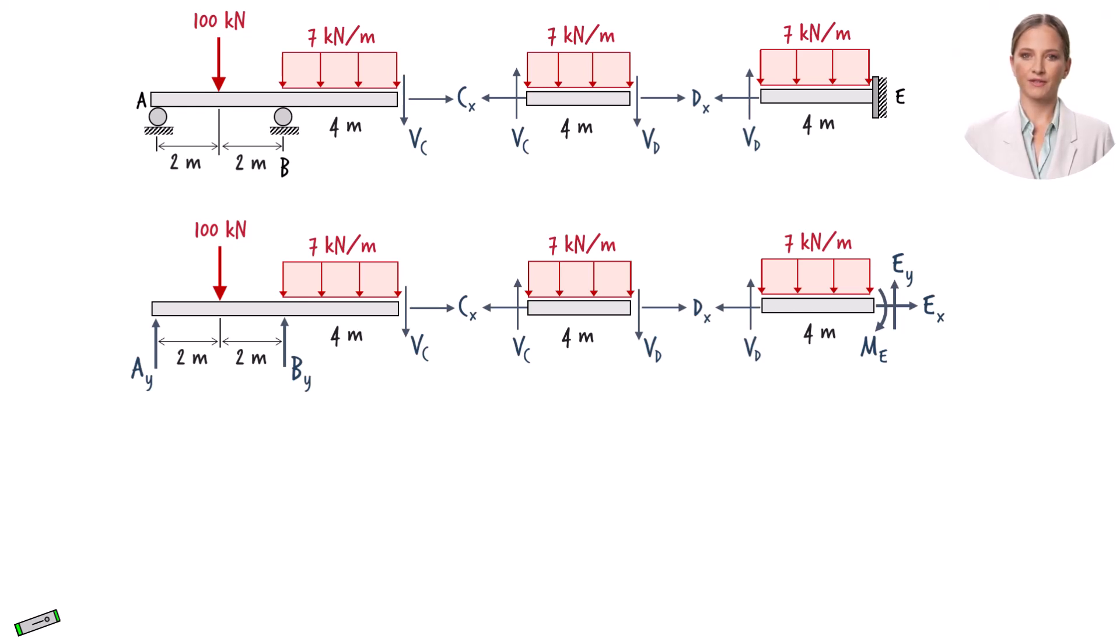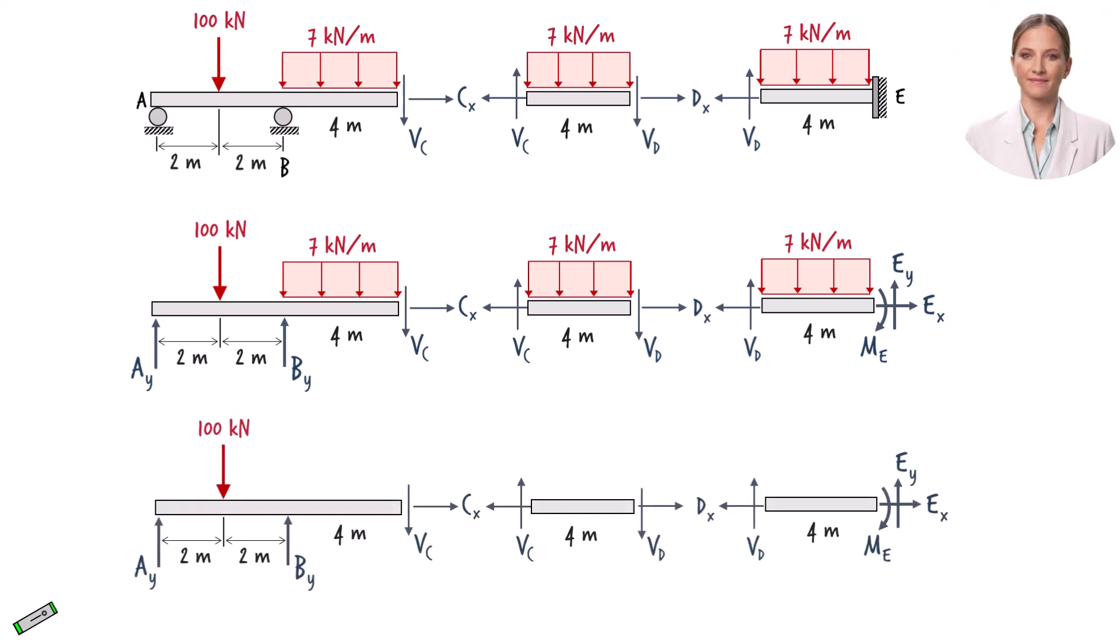To facilitate writing the equilibrium equations, we can replace each distributed load with its equivalent concentrated load. This rectangular load can be replaced by a point load of 28 kilonewtons. The load is placed at the center of the rectangle.